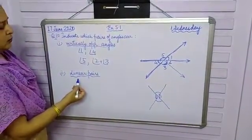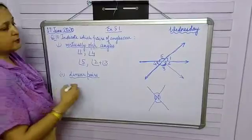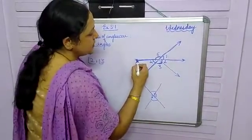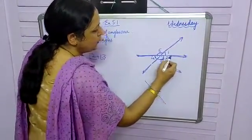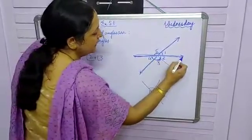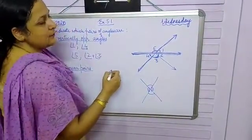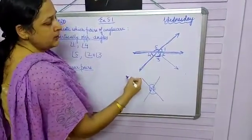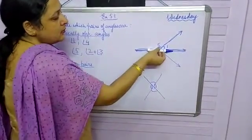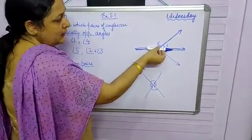Now in second part, we have to find out the linear pairs. Means which are forming a linear, two adjacent angles which form a straight line, two adjacent angles whose sum is 180. Take one line and see if two angles above this or below this are forming a straight line, a linear pair.